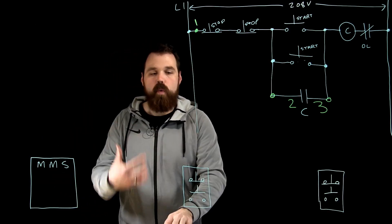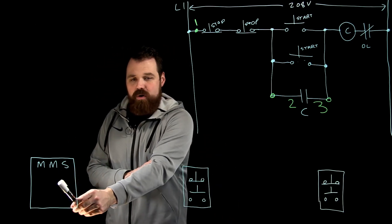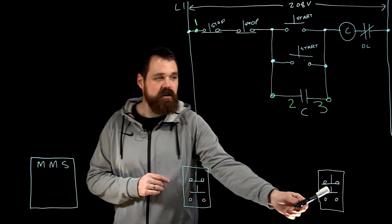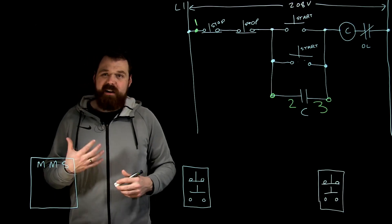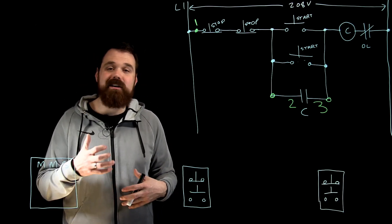So now let's talk about wiring this actual circuit. So let's look at this right here. I've got over here my magnetic motor starter, one start stop station and another start stop station. Now there's a couple of really simple rules we want to keep in mind when we're wiring control stations.